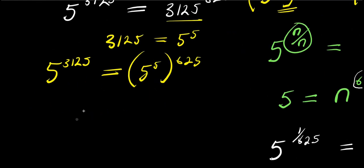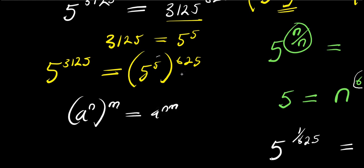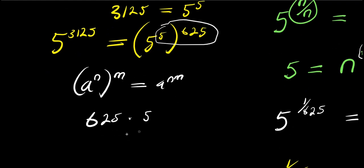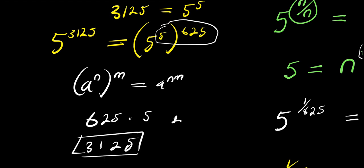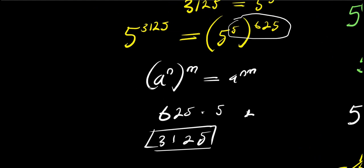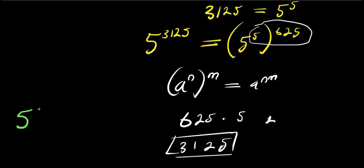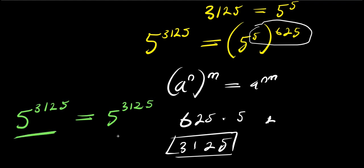Using the identity a^n raised to the power m equals a^(n times m), I multiply: 5 times 6/5 equals 6, and 5 times 6 is 30, plus 5 times 5 is... working through the arithmetic: 5^5 times 6/5 gives the exponent 5 times 625, giving 3125. So the right-hand side becomes 5 to the power of 3125, which equals 5 to the power of 3125. Left-hand side equals right-hand side — the equation is satisfied.